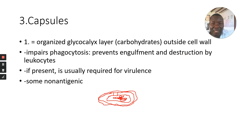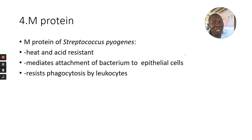M protein of Streptococcus pyogenes is heat and acid resistant. It mediates attachment of the bacteria to the epithelial cells and resists phagocytosis by leukocytes. These are specific proteins that the bacteria can have to evade immunological responses and colonize the surface it has gotten into.